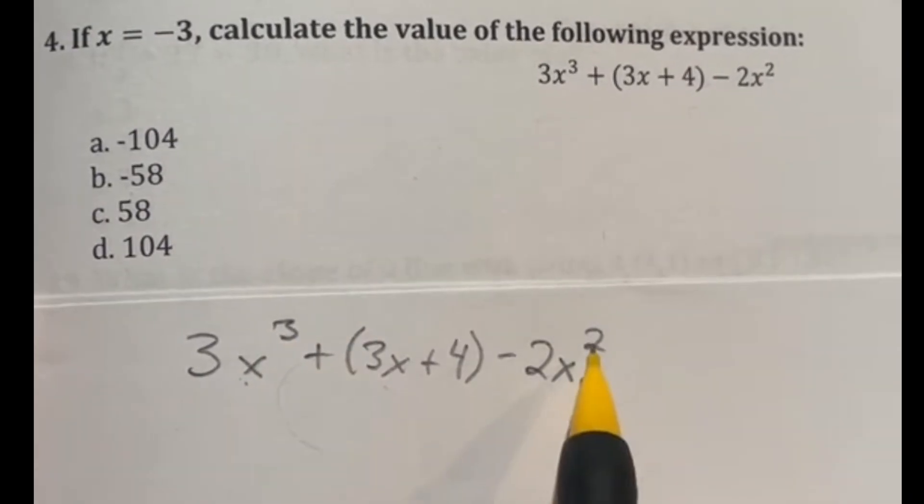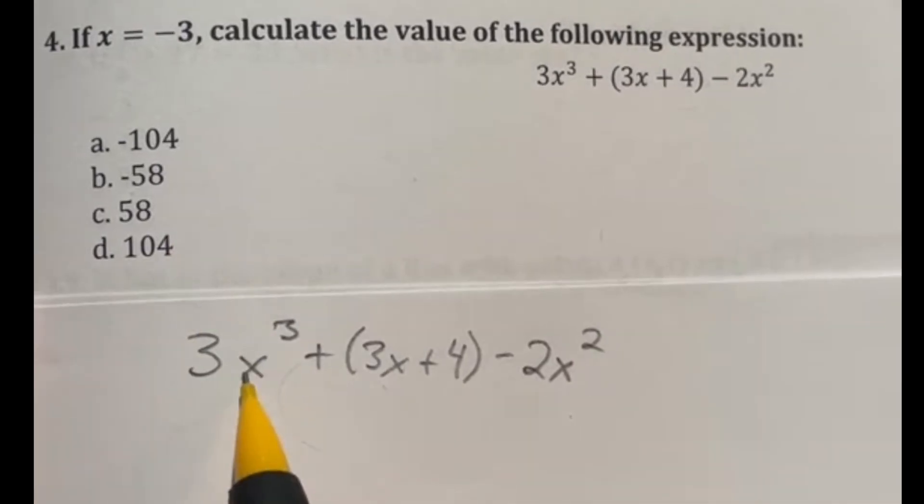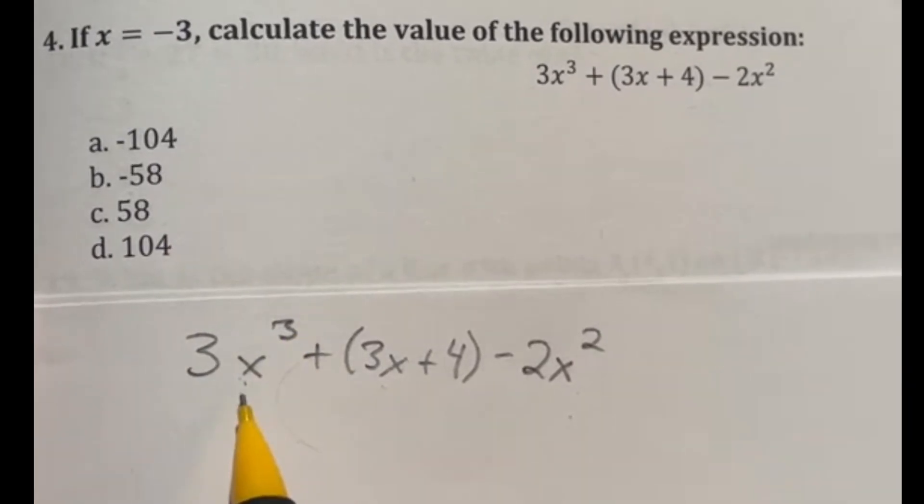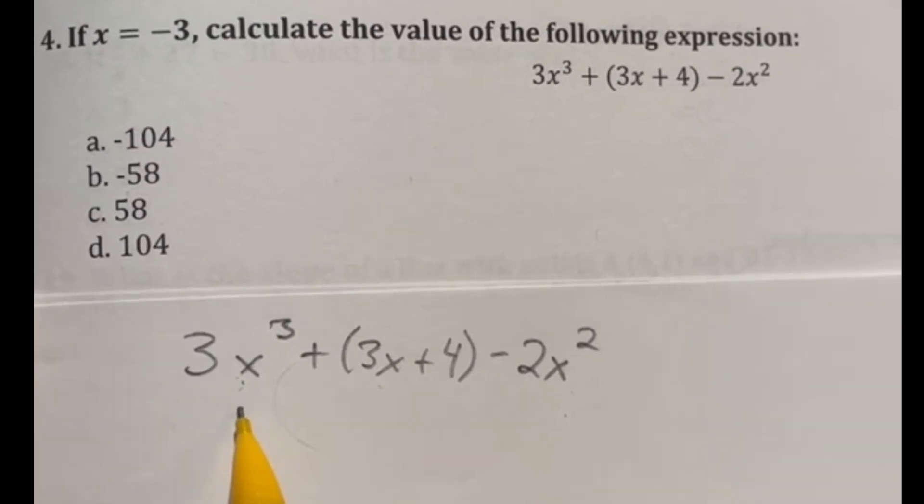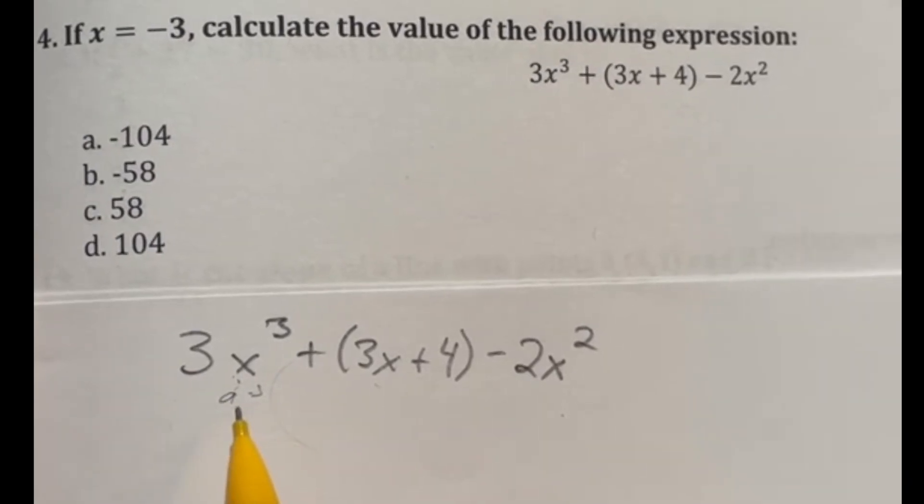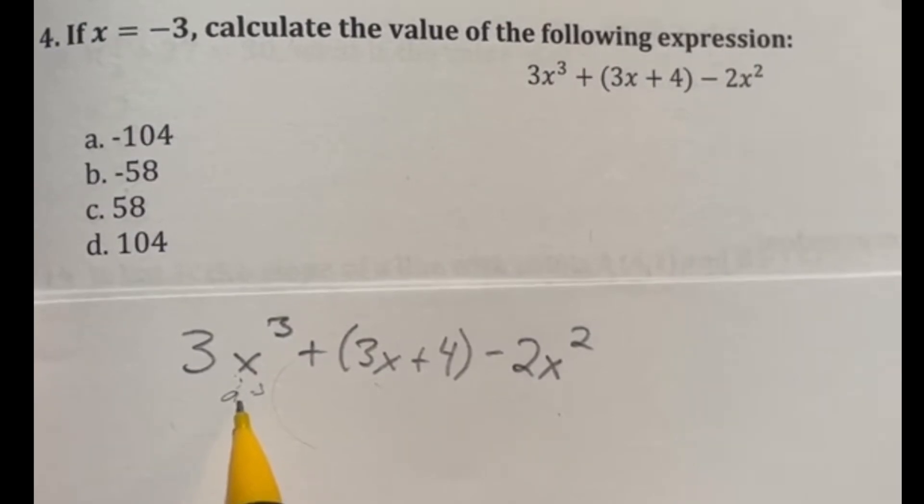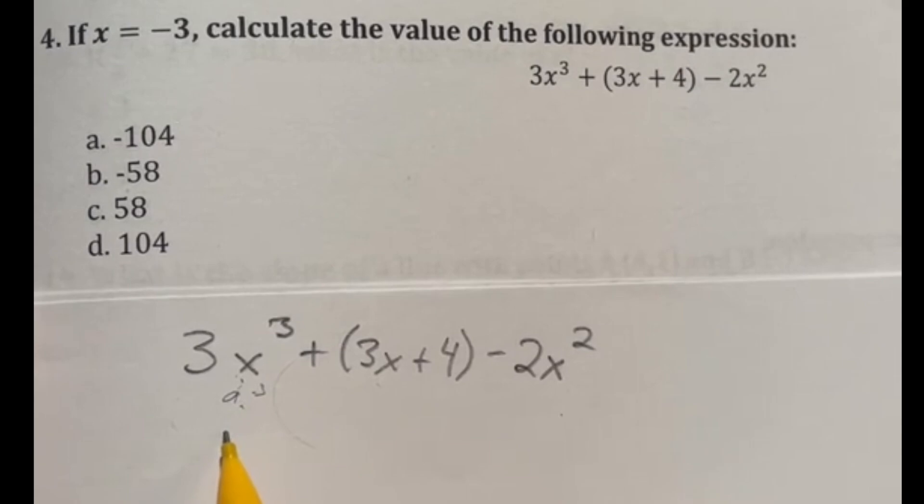So the first thing I want to do is just plug in this number. And if I have an exponent, I'm going to expand that out. So -3 to the third power. Well, that means I'm going to do -3 times -3, which would give me a positive 9. But I still need to multiply that by another -3. And we don't have a calculator here, so we got to do it all in our heads. So we're going to multiply by another -3 giving me -27.